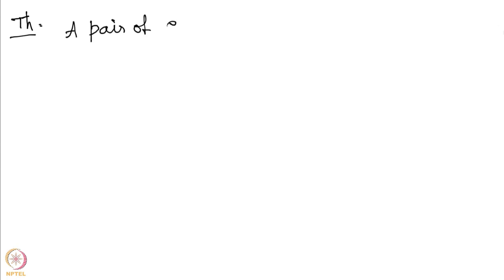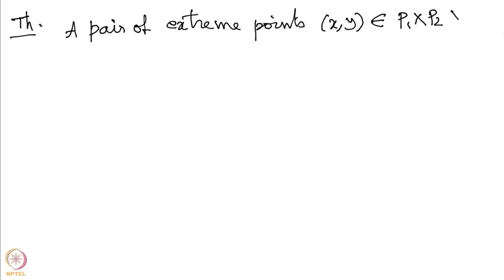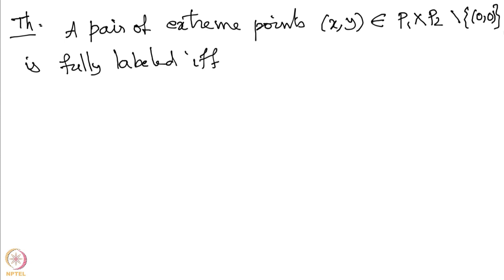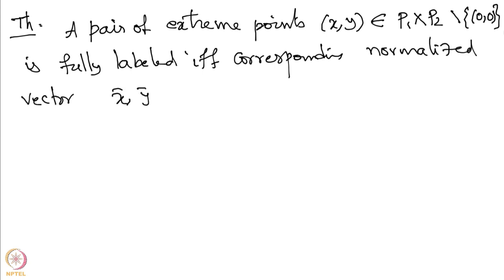Now let us look at the next theorem, which says that a pair of extreme points x, y of the polytope P1 × P2 minus {(0,0)} is fully labeled if and only if the corresponding normalized vector (x̄, ȳ) is a Nash equilibrium. Let us look at the proof of this fact.